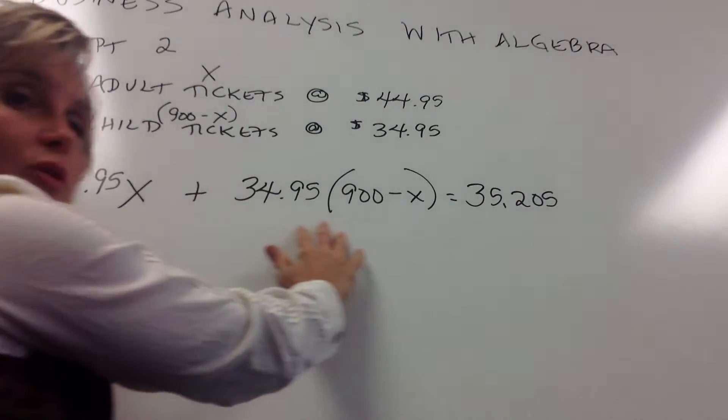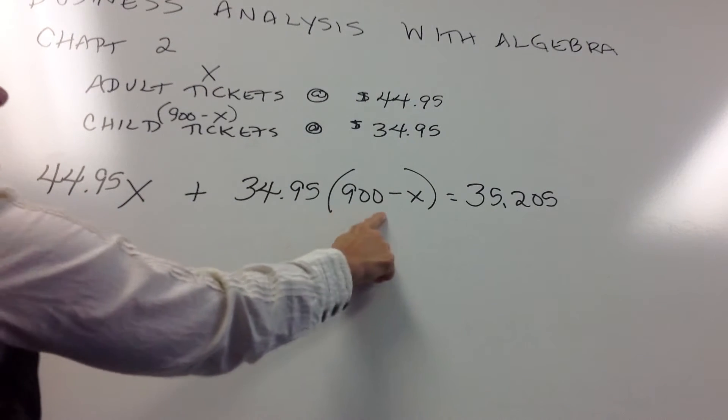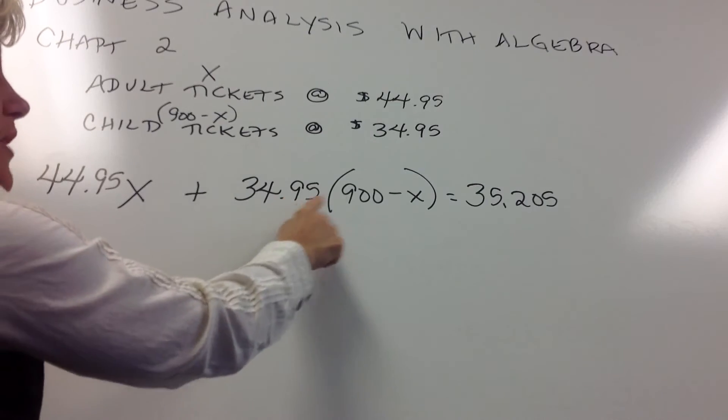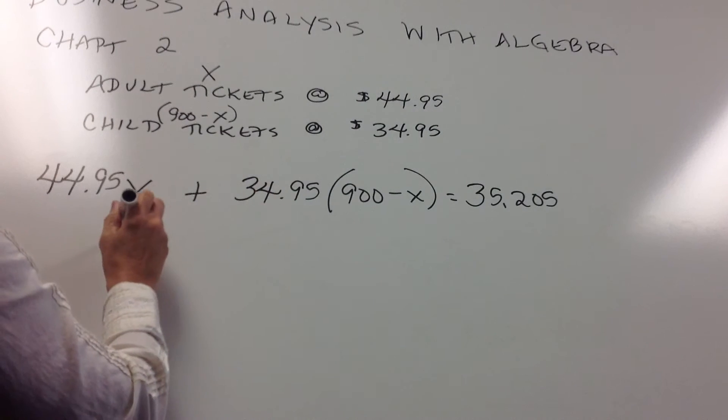So then that's our formula. Again, it's kind of long, but we only have the one variable, and then we will solve for that. So the first thing we need to do here is get rid of the parentheses. To do that, we multiply everything within the parentheses by that $34.95.